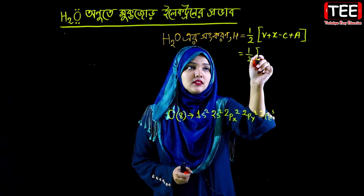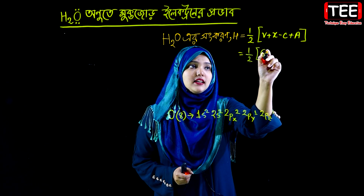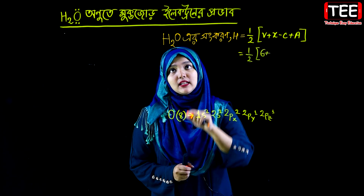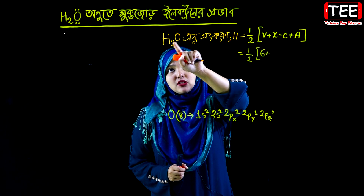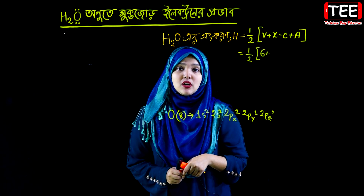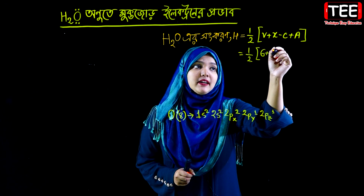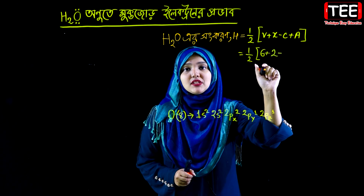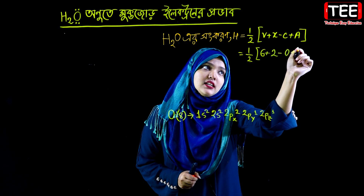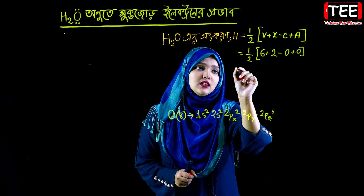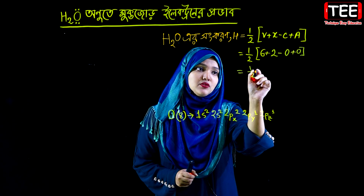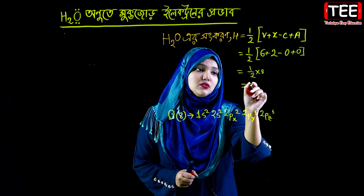The charge is 0, and the charge is 0. So: 6 plus 2 is 8, and half of 8 is equal to 4.